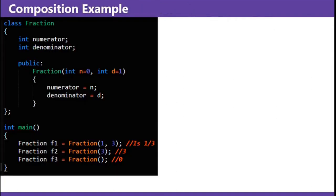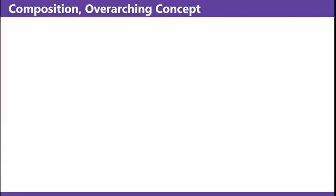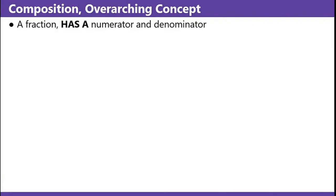This is a composition example — a Fraction class. This fraction has a numerator and denominator. It has a constructor where if you don't give the first argument, the numerator is zero. If you don't give the second argument, the denominator is one. In all other cases, the numerator and denominator are just what you pass in — so the first one you pass in 1 and 3, that's one third; the second one you pass in 3, so it's just 3; the third one you pass in nothing, so that fraction is zero. The overarching concept: a fraction has a numerator and denominator. Next video will cover programming style. Ciao.